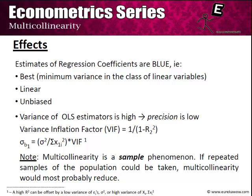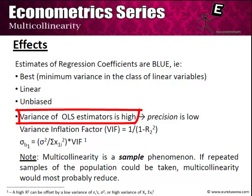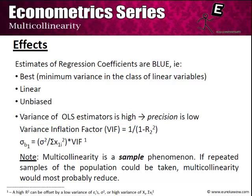The estimates of regression coefficients will still be BLUE — best, linear, and unbiased. This is because the Gauss-Markov theorem assumes no perfect linear relationship between the regressors. Since imperfect multicollinearity also has no such perfect linear relationships, the OLS estimates remain best linear and unbiased. However, the variance of OLS estimators is high, meaning their precision is low.